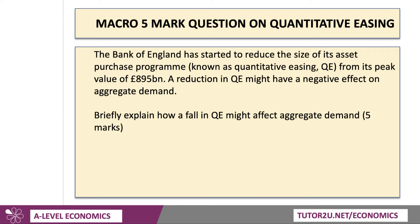We're told that the Bank of England has started to reduce the size of its asset purchase programme, otherwise known as quantitative easing, or QE, reducing it from a peak value of $895 billion. A reduction in quantitative easing might have a negative effect on aggregate demand. The question is: briefly explain how a fall in QE might affect aggregate demand. Five marks.